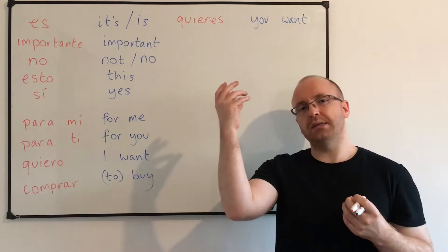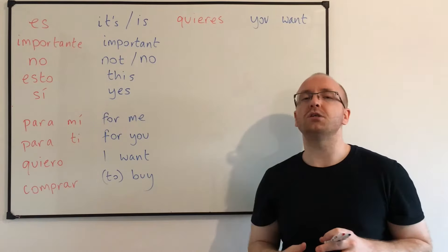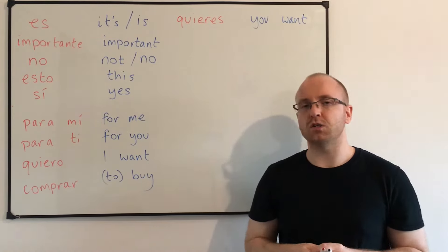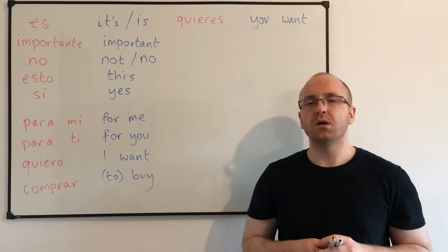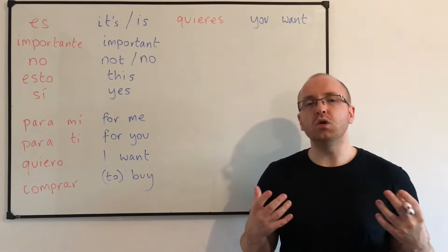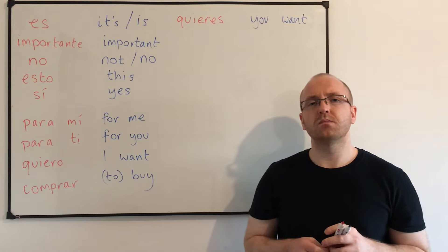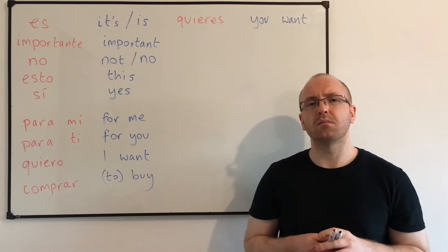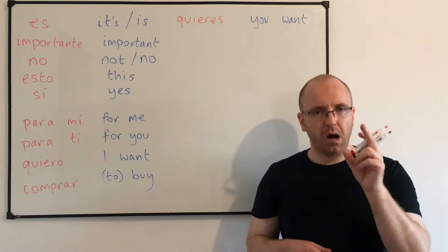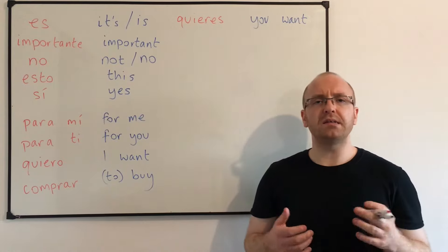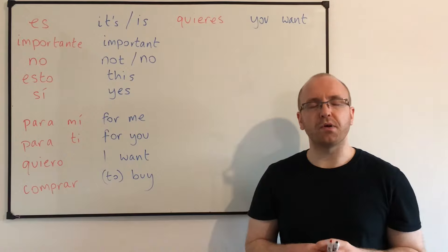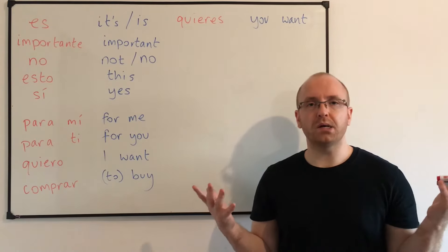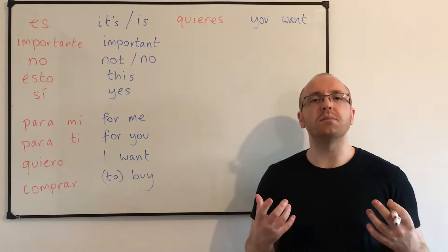And when we do, we have to raise that intonation in our voice to make it sound like a question, because there's not that question marker 'do' before. So how would you say 'do you want to buy?' Quieres comprar? Good. Try going up more on the 'quieres.' Quieres comprar? Perfect. Excellent — so 'do you want to buy?'